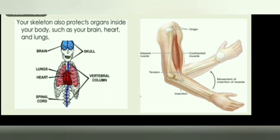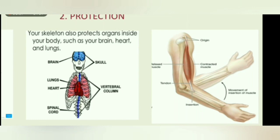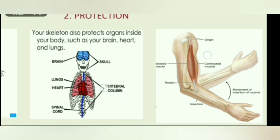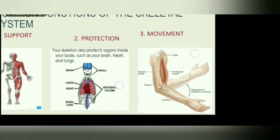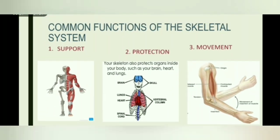When the muscle is contracted or relaxed, movement of the skeleton can be observed. These are the three major functions of the skeletal system of animals.